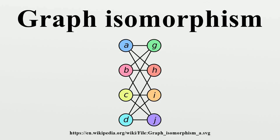Its generalization, the subgraph isomorphism problem, is known to be NP-complete. The main areas of research for the problem are design of fast algorithms and theoretical investigations of its computational complexity, both for the general problem and for special classes of graphs.